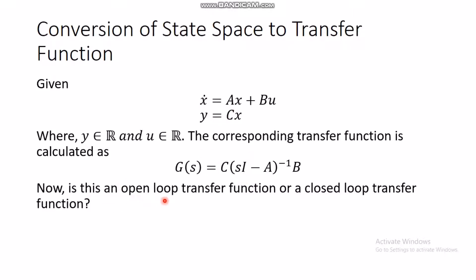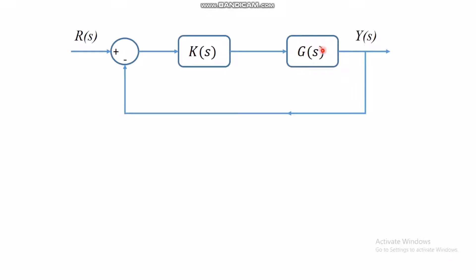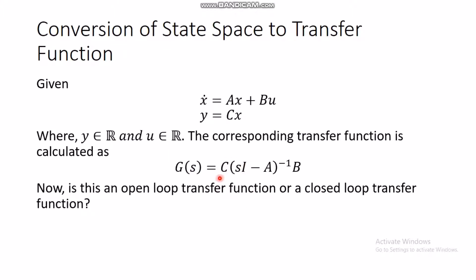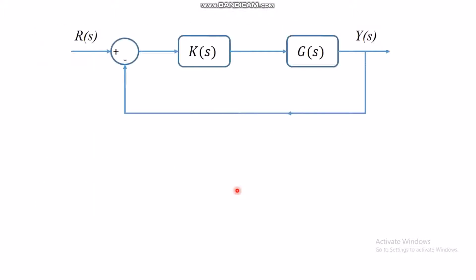Once you have this transfer function for the state space system, you must ask: is it an open loop or a closed loop transfer function? The answer is that G(s) = C(sI - A)⁻¹B is just the transfer function of the plant. Looking at the block diagram of a feedback control loop, this term is just G(s) — you still need the transfer function of the controller.